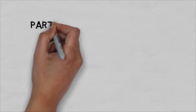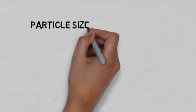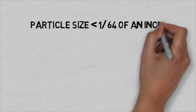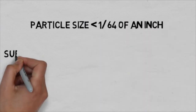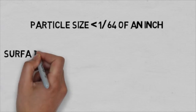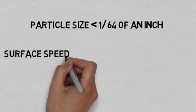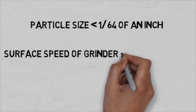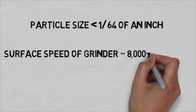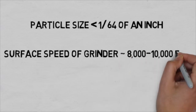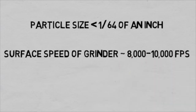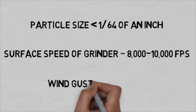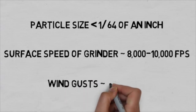Particles such as sparks and construction debris often have sizes smaller than a 64th of an inch, meaning they have extremely small mass. The surface speed of an average grinder is approximately 8,000 feet per second, meaning the sparks are traveling at least that fast as they leave the grinder. Air effects do slow them down on the way to the eye. Wind gusts can blow construction dirt and debris up to 110 feet per second.